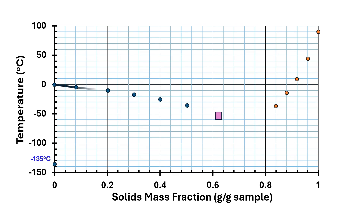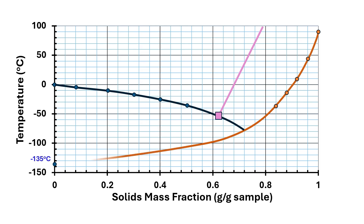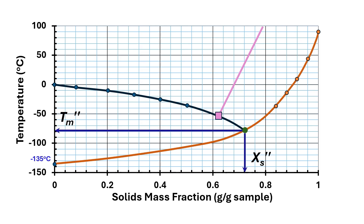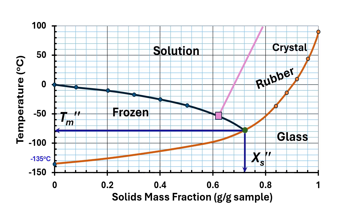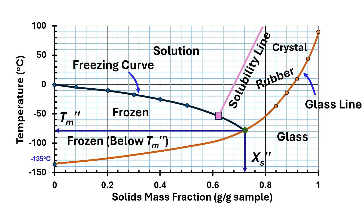We could then draw a freezing curve, a solubility line, and then a glass line. We could then determine the maximal freeze concentration condition, which is the intersection of the freezing curve and the glass line. Now we could see regions of glass, rubber, crystal, solution, frozen above Tm double prime, and frozen below Tm double prime, as well as the glass line, solubility line, and freezing curve. Finally, we could see the macro regions one, two, three, and four.